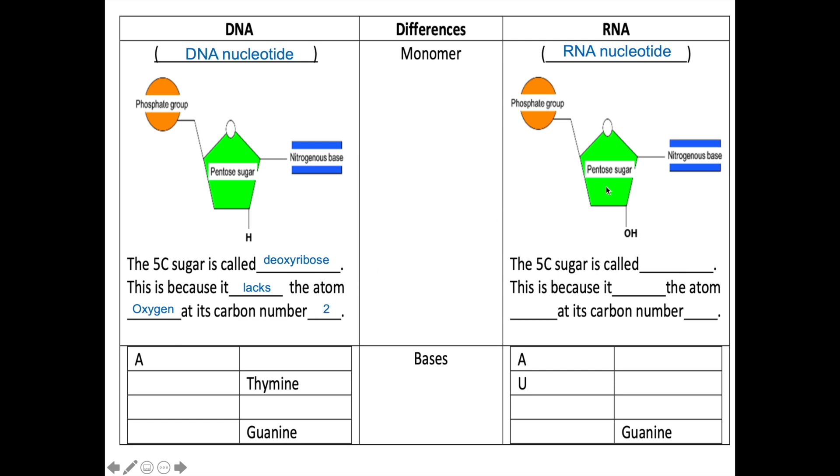However, as you can see, the pentose sugar for RNA nucleotide, there is a presence of oxygen atom at carbon number 2. So therefore, the pentose sugar, or the 5-carbon sugar, is called ribose. This is because it has the atom oxygen at its carbon number 2.